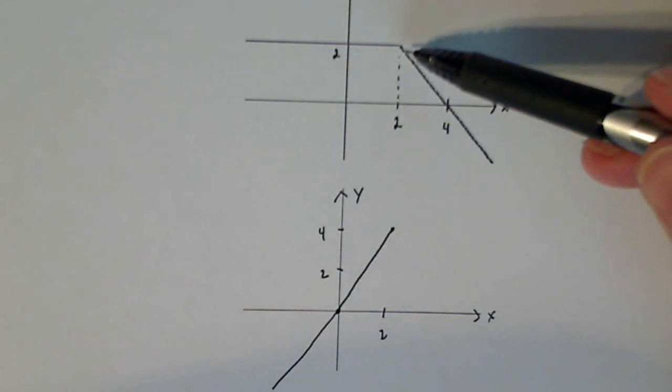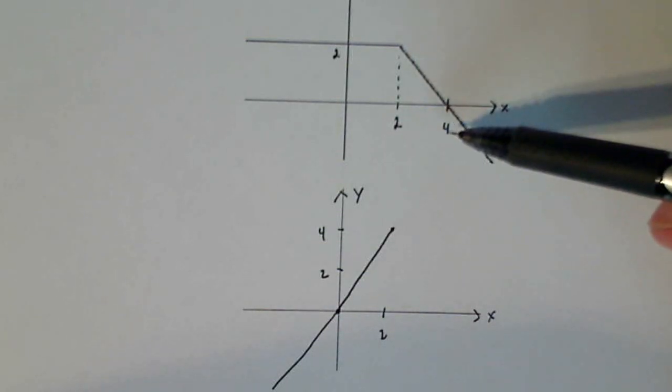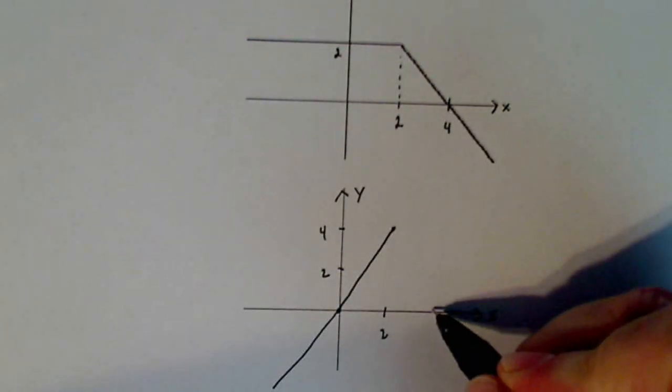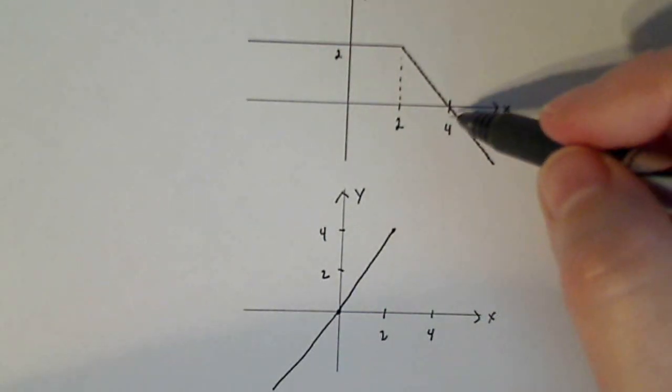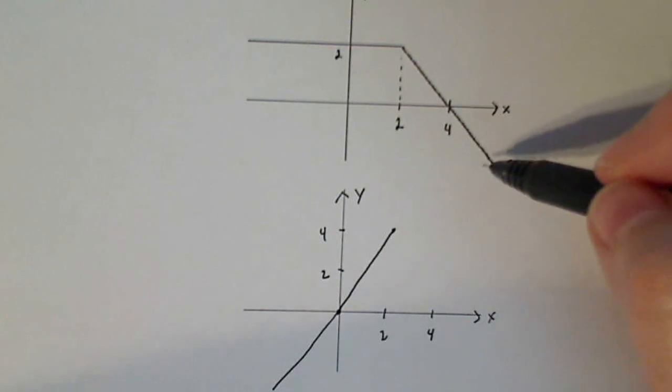So looks like my graph is going to be increasing up until four because my derivative is positive, and my graph will be decreasing after four. Now this is a linear function. If you think about what kind of function has a derivative that's linear, it's going to be some sort of quadratic function.